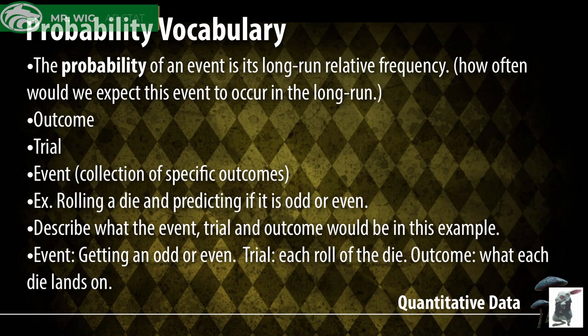Probability is essentially how often we expect certain things to occur. In general, probability is the number of outcomes we're interested in divided by the total number of outcomes. So let's define some of these words.